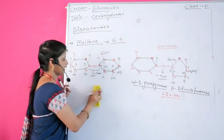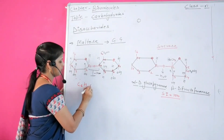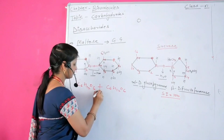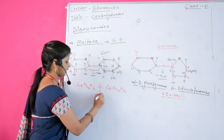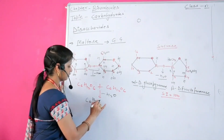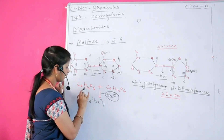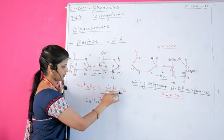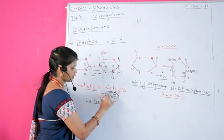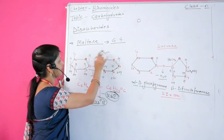How does this bond formation occur? One glucose molecule has the formula C6H12O6, and the second also has the formula C6H12O6. When two molecules of glucose combine, they release one molecule of H2O. The formula becomes C12H22O11, because H24 becomes H22 due to the release of two hydrogen atoms, and one oxygen atom is also released, making the oxygen count 11. This is the formula of maltose sugar.